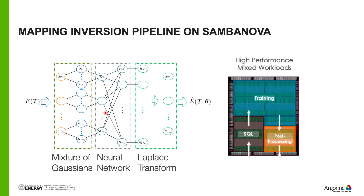We take this architecture and leverage the mixed workload training mode of SambaNova, mapping it onto the SambaNova hardware. The data comes in, encoded into a mixture of Gaussians — part of the PMUs and PCUs are allocated for that. The neural network training component is mapped to the optimized SambaNova training units. The Laplace transform, a computationally intensive part, is also mapped into the PMUs and PCUs. Again, the advantage is no context switching, and data moves from one module to another without returning to main memory.